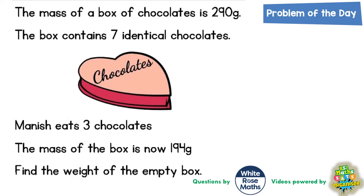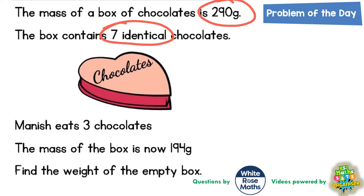Welcome problem solving fans to another problem of the day, and this one is all about a box of chocolates. We're told that the mass of the box of chocolates is 290 grams and the box contains seven identical chocolates, but Manich is eating three chocolates. The mass of the box has now dropped down to 194 grams and we've got to find the weight of the empty box.